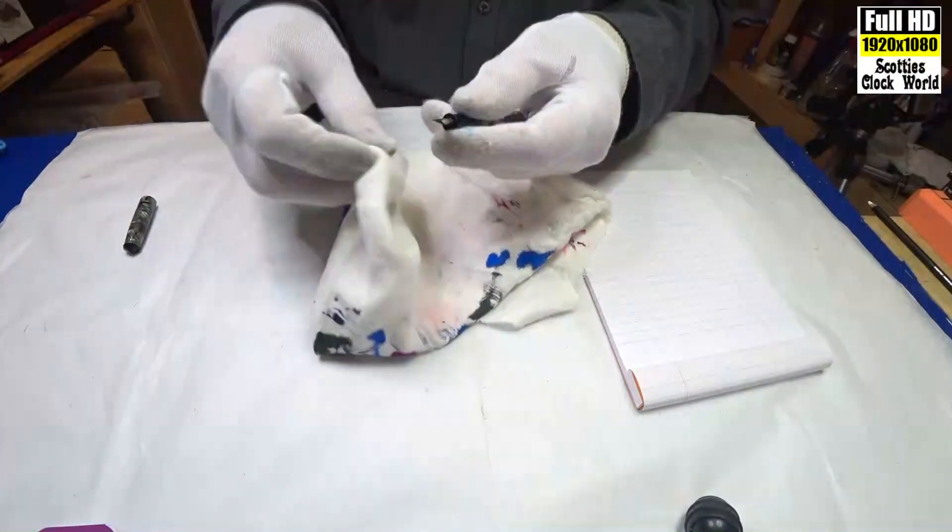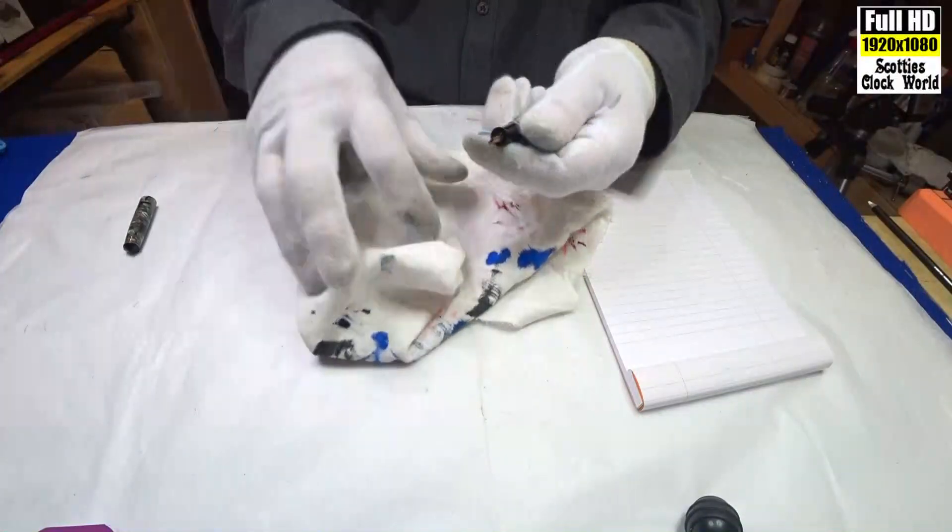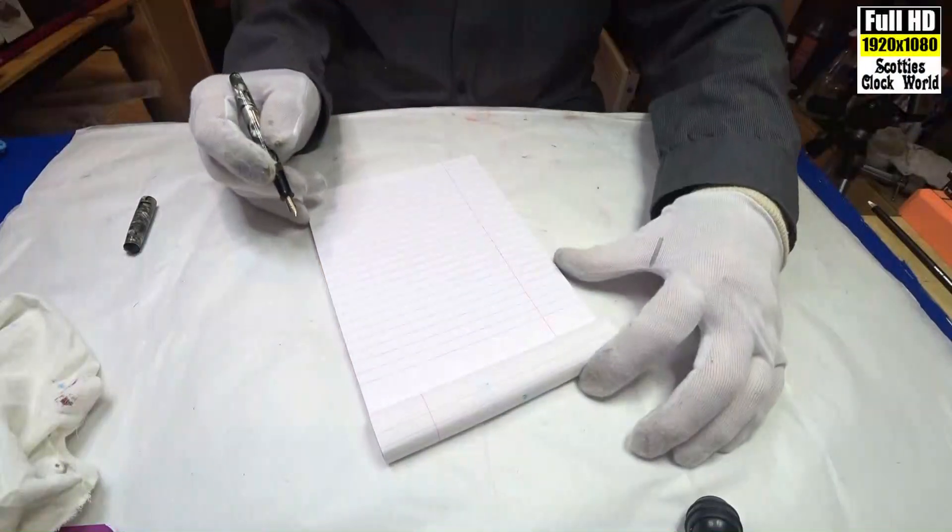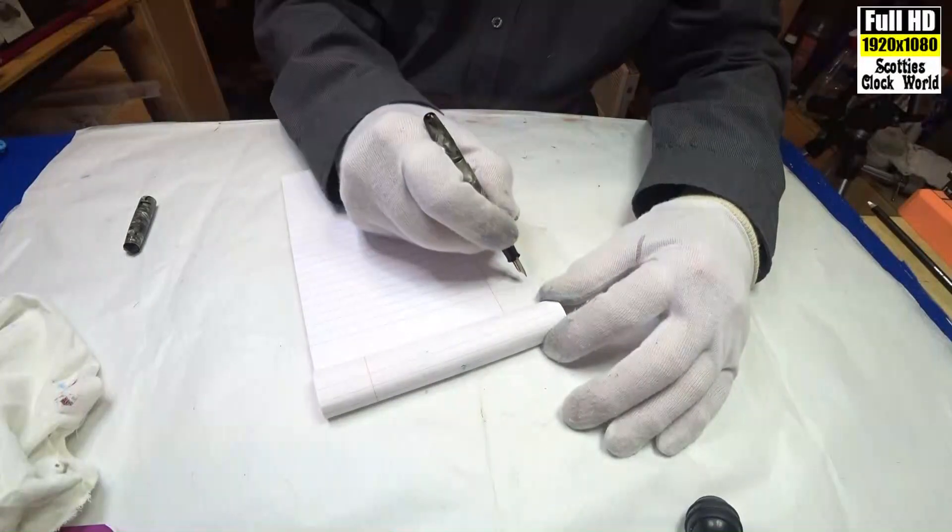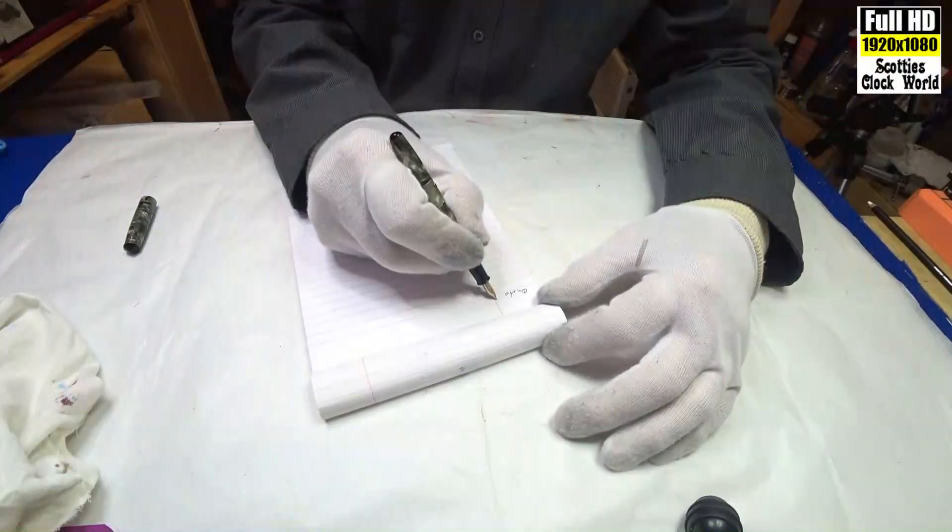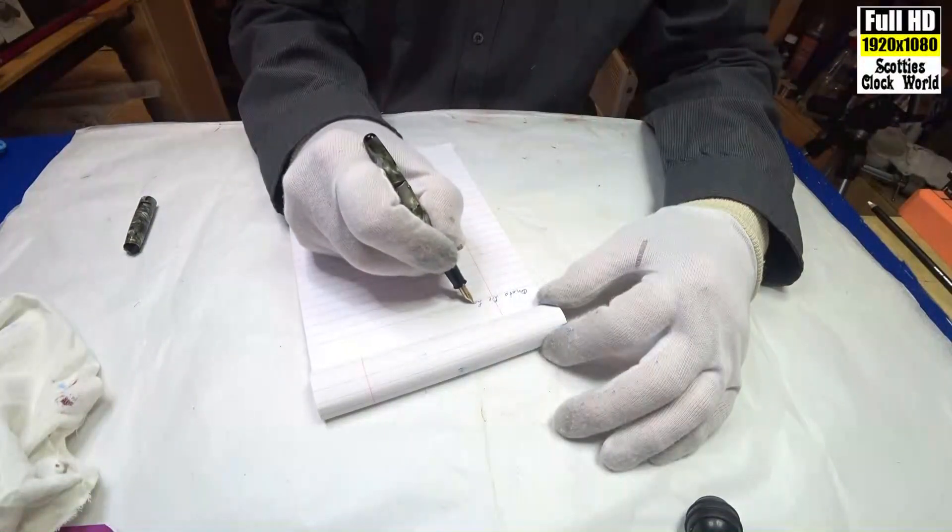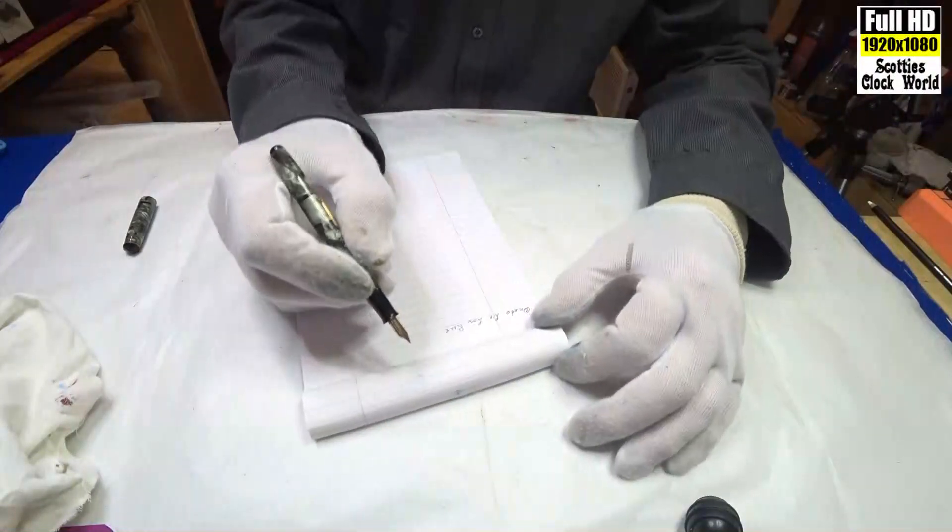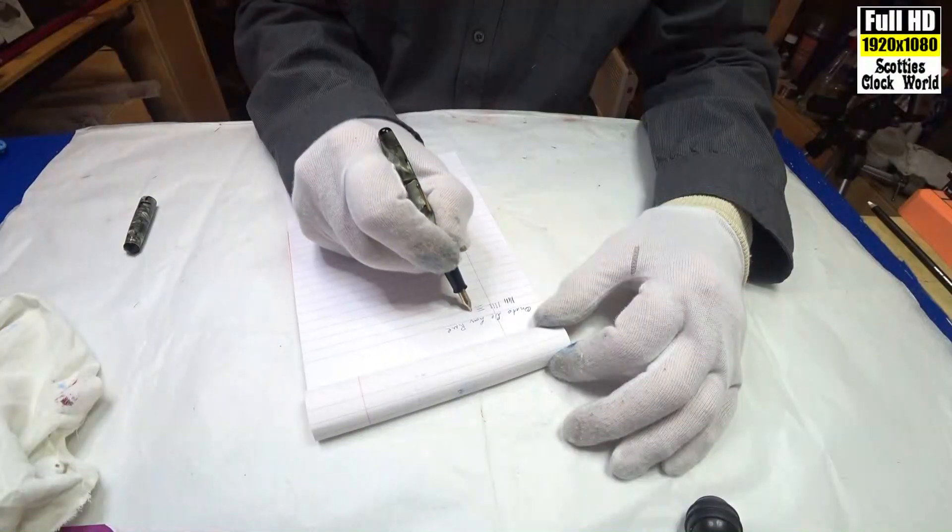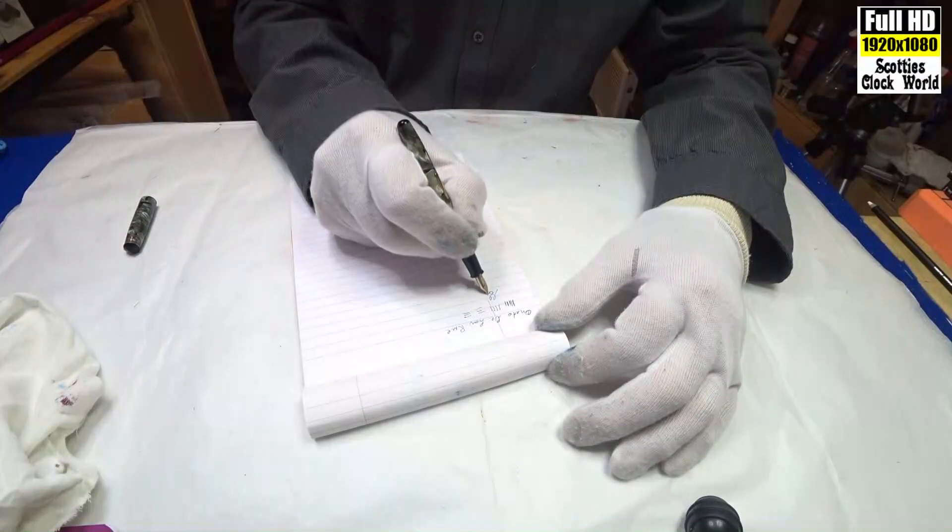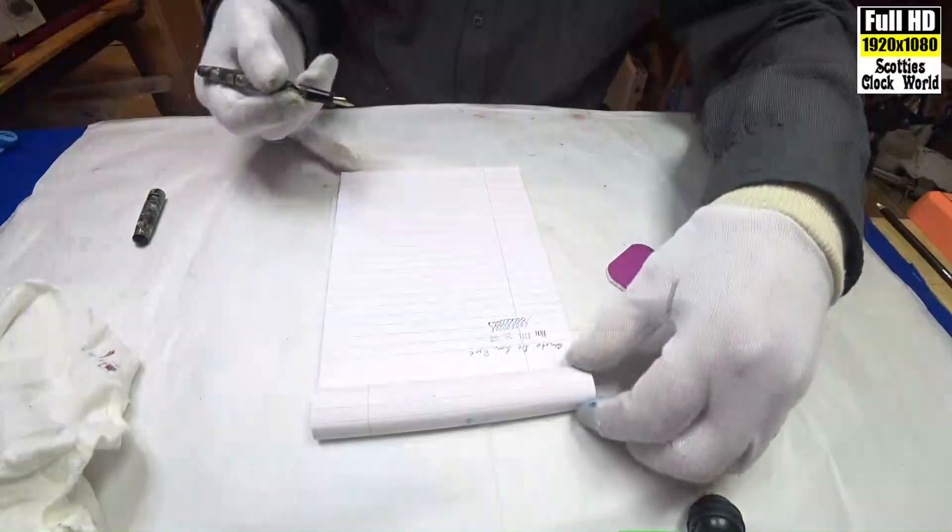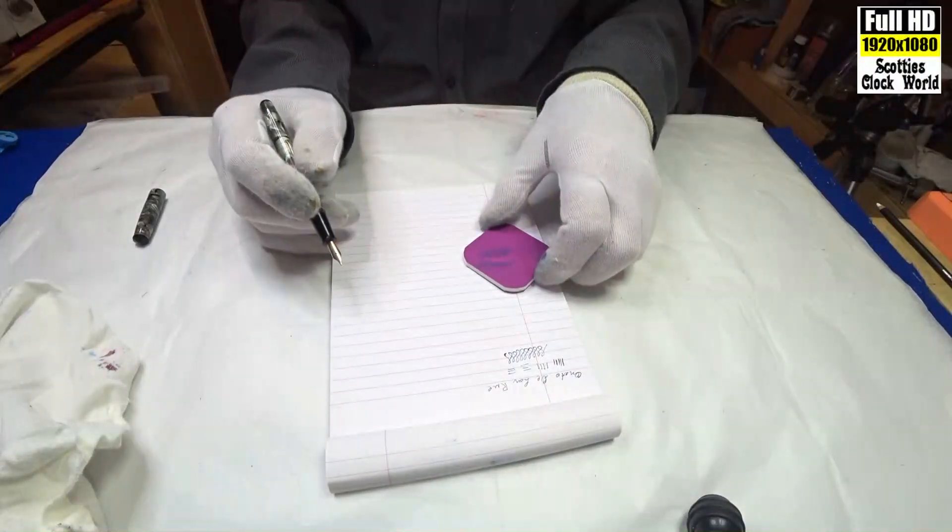Wipe off any excess around the section and off the nib. Alright. First test. Let's see how we go. A little bit scratchy, but we're going to fix that in a moment. That is a very fine nib. Very fine.